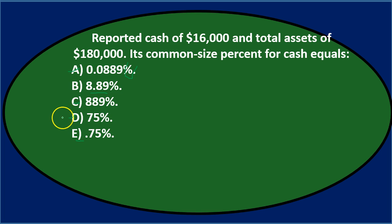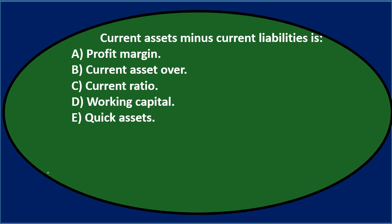Next question: current assets minus current liabilities is either a) profit margin, b) current asset over [turnover], c) current ratio, d) working capital, or e) quick assets. Let's use the process of elimination. Profit margin — possibly keep it. Option B has 'over' which doesn't seem quite right, and this is a subtraction problem not a ratio. Current ratio involves current assets and current liabilities, but that's typically a division/ratio not subtraction, so probably not that one.